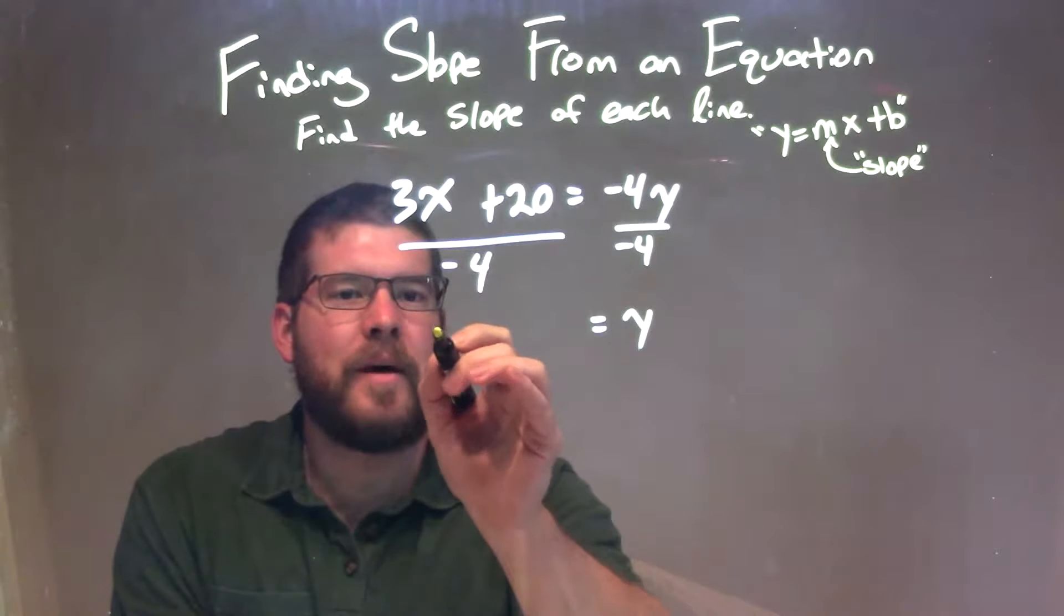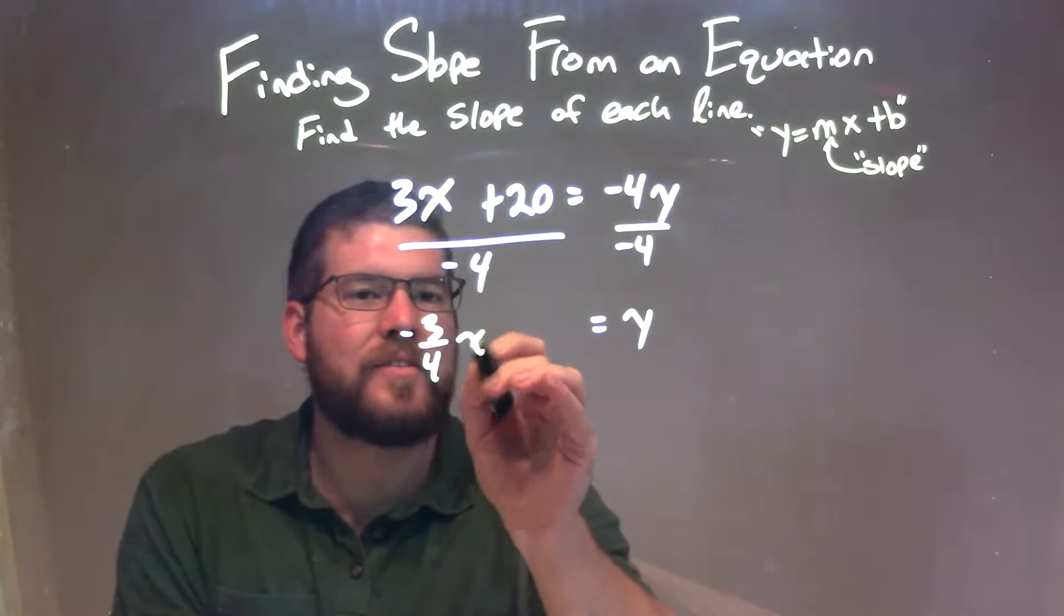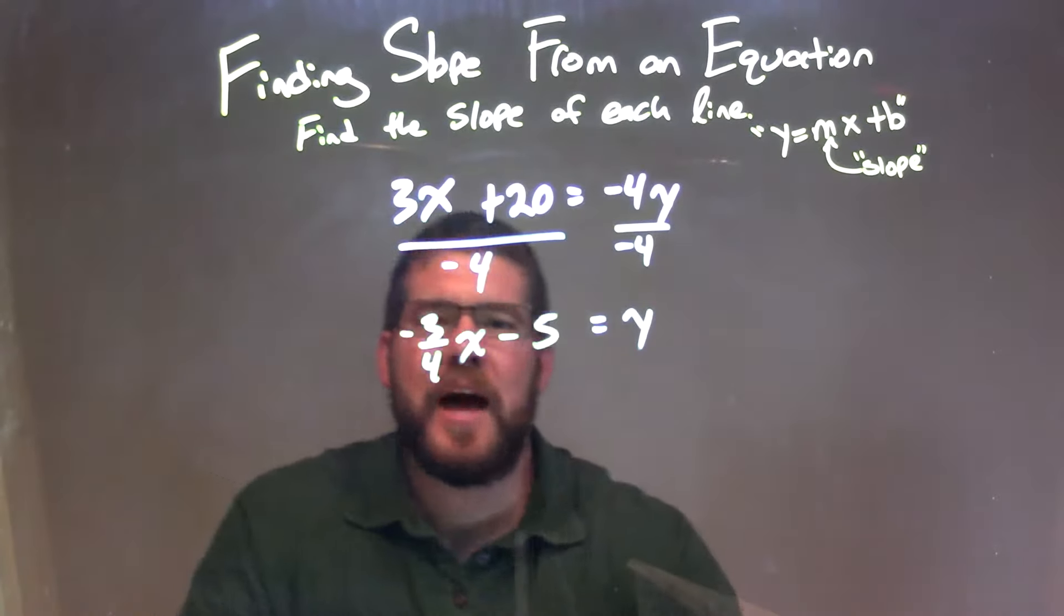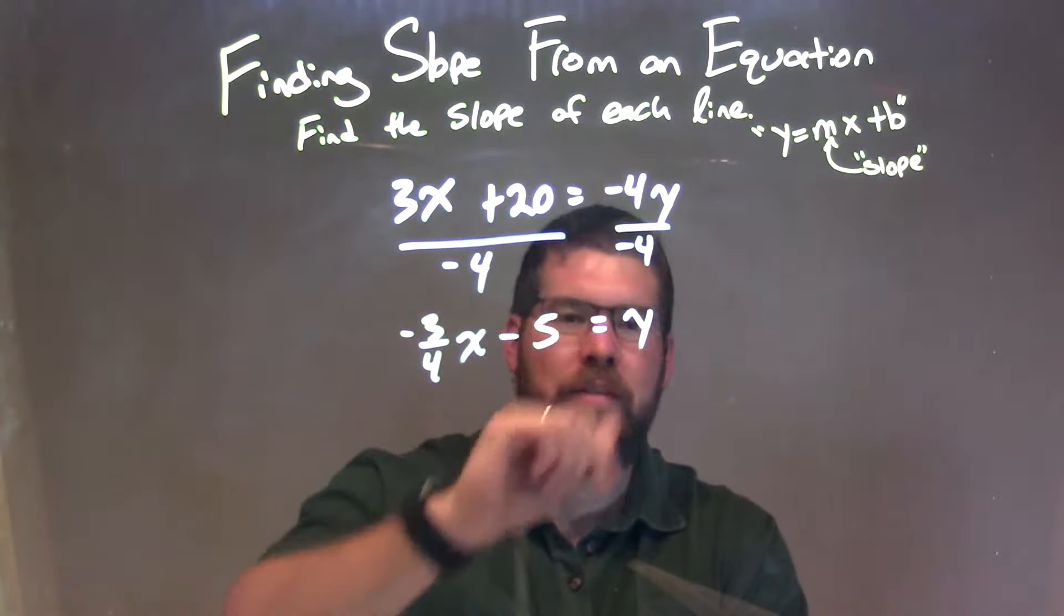So 3x divided by negative 4 is negative 3 fourths x. And then 20 divided by negative 4 is negative 5. So now we have negative 3 fourths x minus 5 equals y.